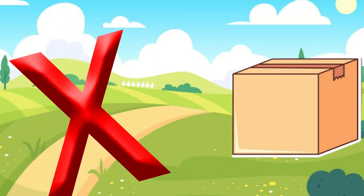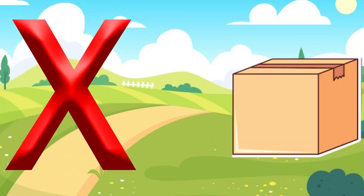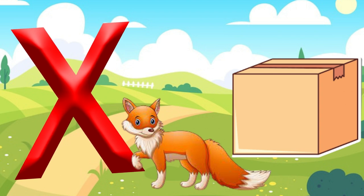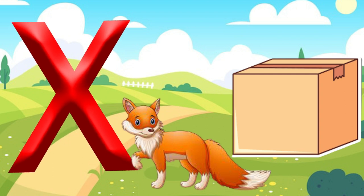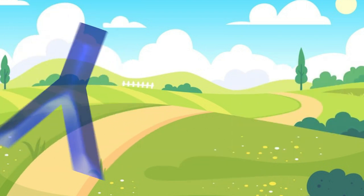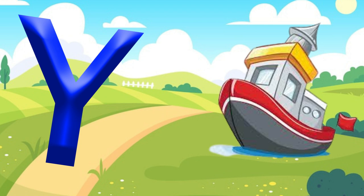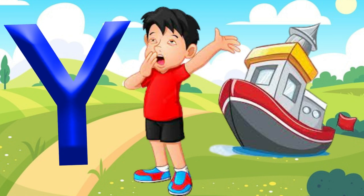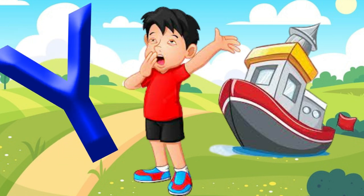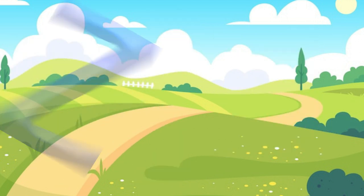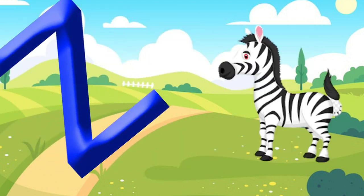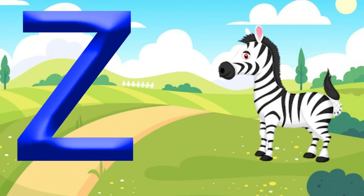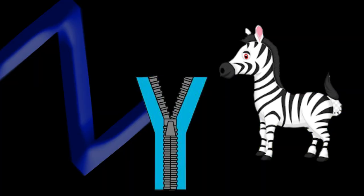X is for Box. X, X. Box. X is for Fox. X, X. Box. Y is for Yacht. Y, Y. Yacht. Y is for Yawn. Y, Y. Yawn. Z is for Zebra. Z, Z. Zebra. Z is for Zip. Zip.